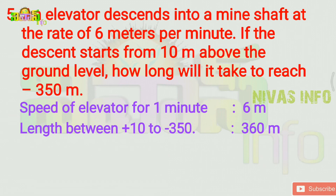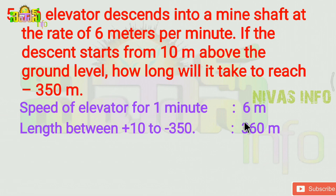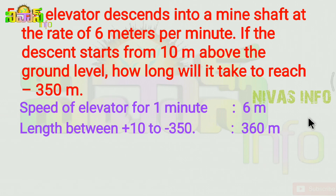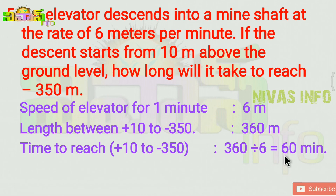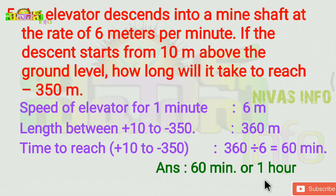How much time will it take? The total distance is 360 meters. Dividing 360 by 6 gives 60. So it will take 60 minutes, which is 1 hour.